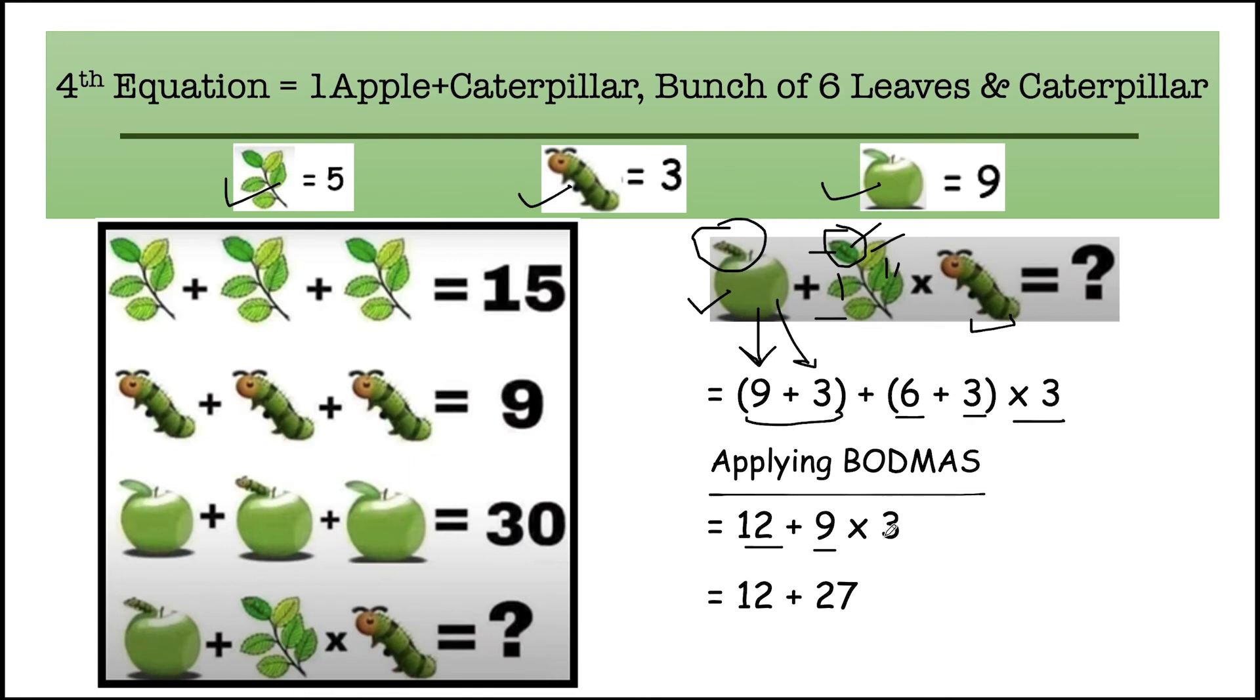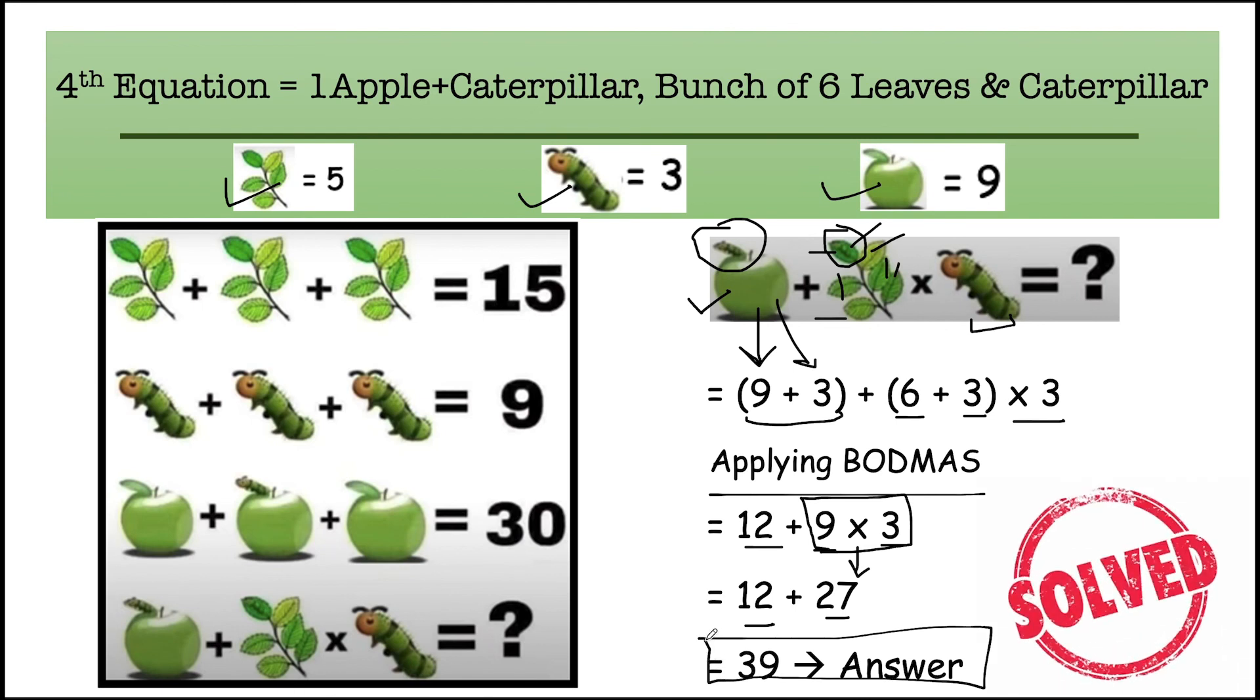Now according to the BODMAS rule, we have to multiply these two digits: nine into three equals twenty-seven. So now we have to add twelve in it, so final answer will be thirty-nine. And this puzzle is also solved.